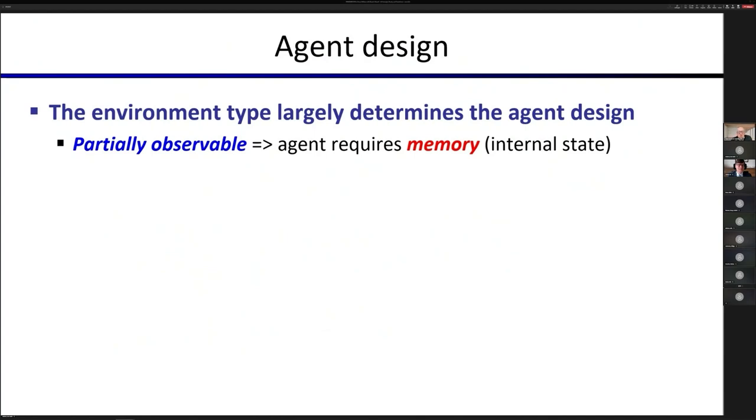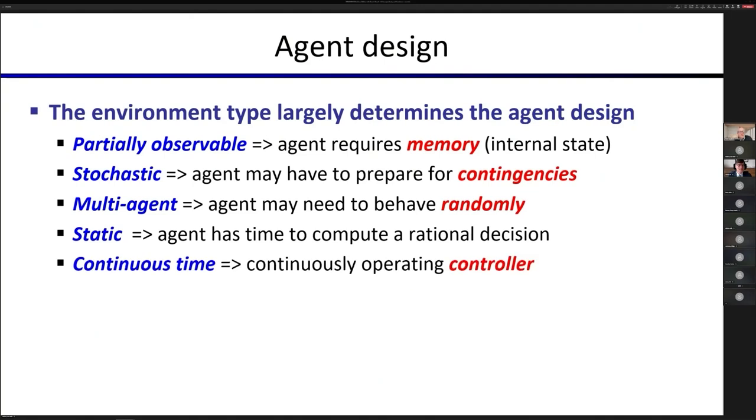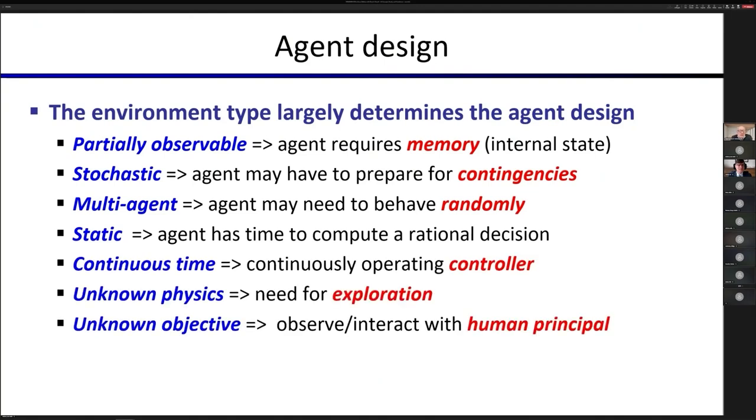So just step through these. There are seven or eight of them. This just illustrates how the properties of the environment affect the way we design the AI system that can operate successfully in that environment. For example, partially observable environments. That means that your perception does not tell you the entire state of the world, which is almost always the case.